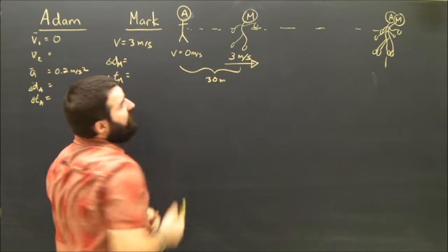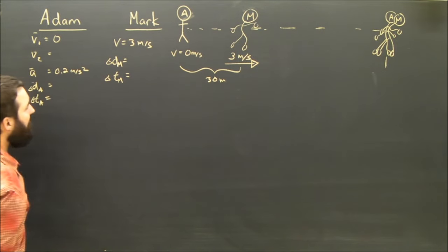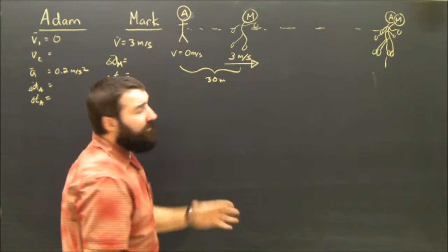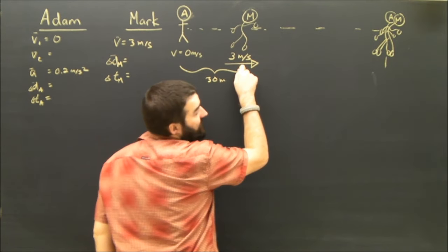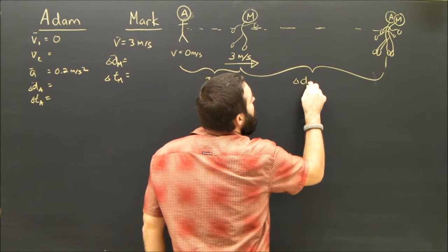30 meters was only the head start. That's not what d in the big five stand for. Delta d with the little arrow. It stands for displacement, how far they actually went. So how far did Mark actually go, for example? Well, he started here, and he ended up here. That is the displacement of Mark.